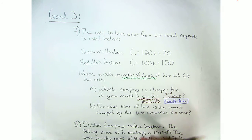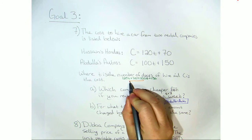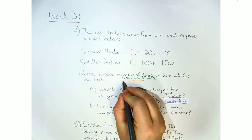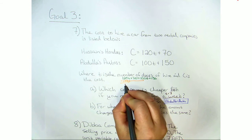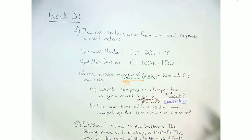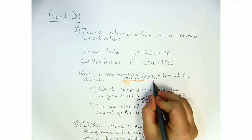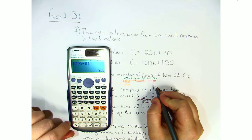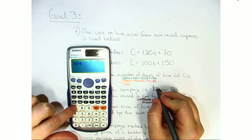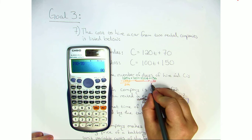All we need to do is go ahead and move this around. So 120 minus 100 equals 20T. And then you move the 70 to the other side, 150 minus 70. Let's get out our calculators to make sure we don't do anything wrong. That gives us 80.